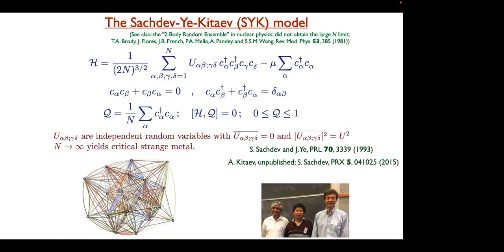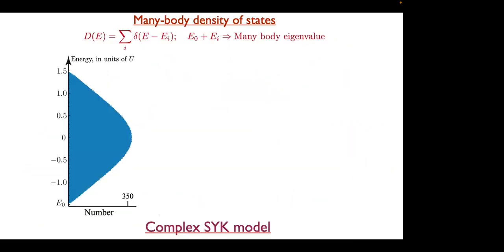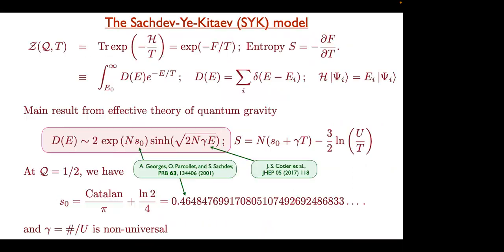As Schott, Stringer, and Stanford have shown, the same result — the sinh — also appears from a random matrix ensemble. But you have to take a double-scaling limit of a random matrix ensemble, going down to the bottom of the band for a very specific potential which is designed to give you the sinh.